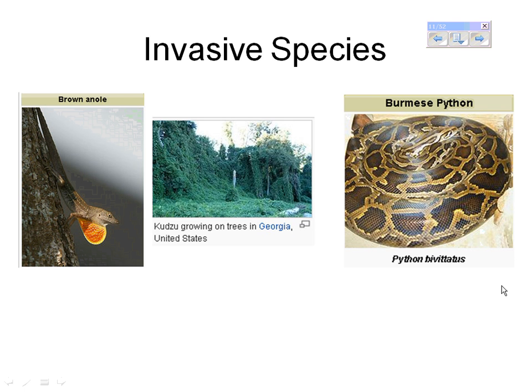Some examples: you can see the brown anole. The brown anole was accidentally introduced to the United States in the 1970s and now has basically inhabited all of the southeast part of the United States. It has out-competed the green anole — they had overlapping niches. Now we see brown anoles everywhere. The green anole numbers have decreased, and they've been kind of pushed into the Everglades. Every once in a while you'll see a green anole.